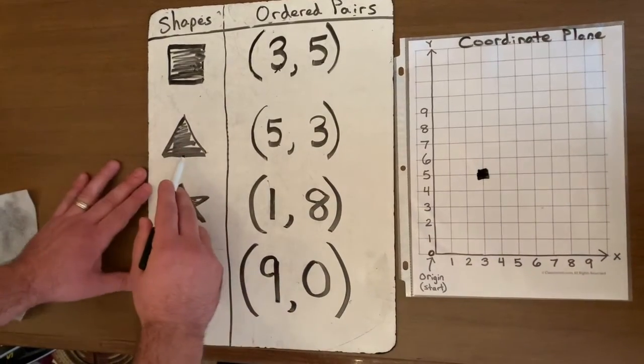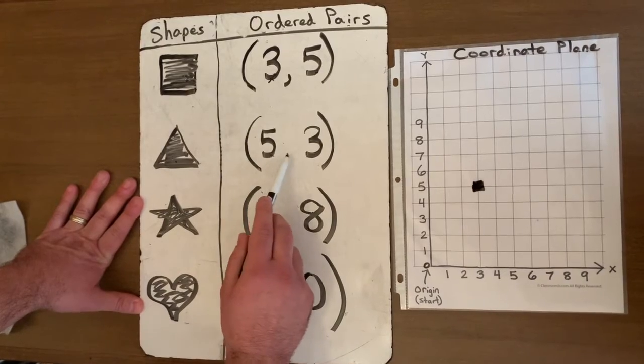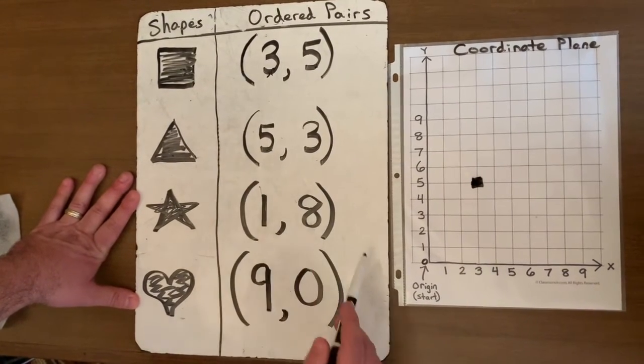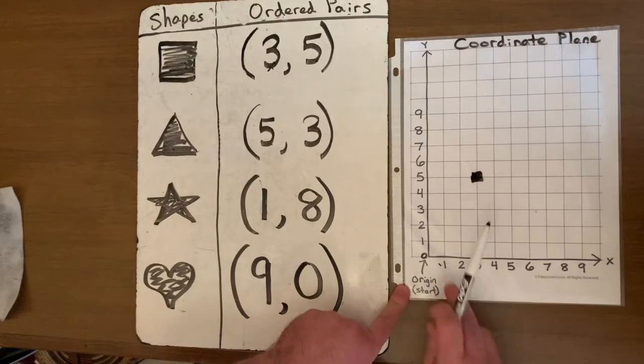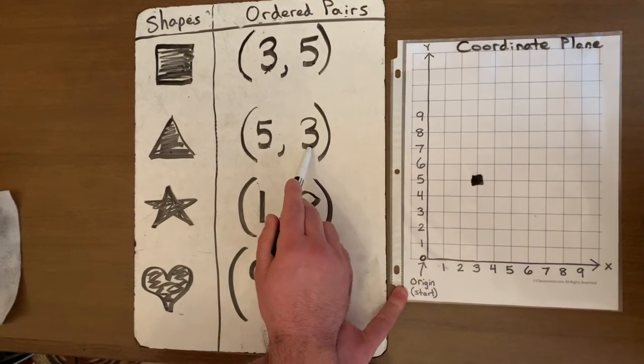Okay, moving on to my triangle. The triangle is at ordered pair 5, 3. So remember on the x-axis on the bottom I'm going to move right. I'm going to go five places to the right and then I'm going to go up three from there.